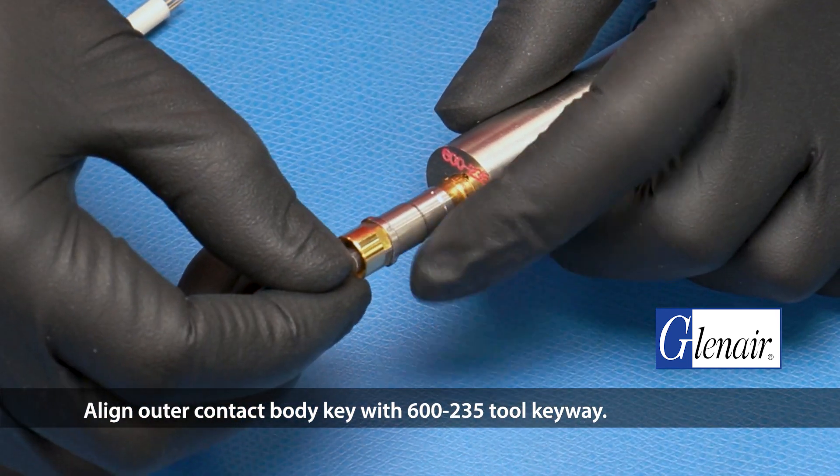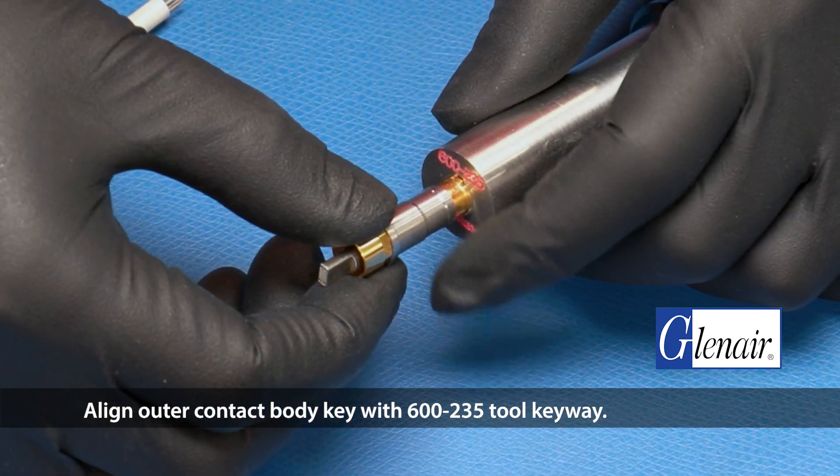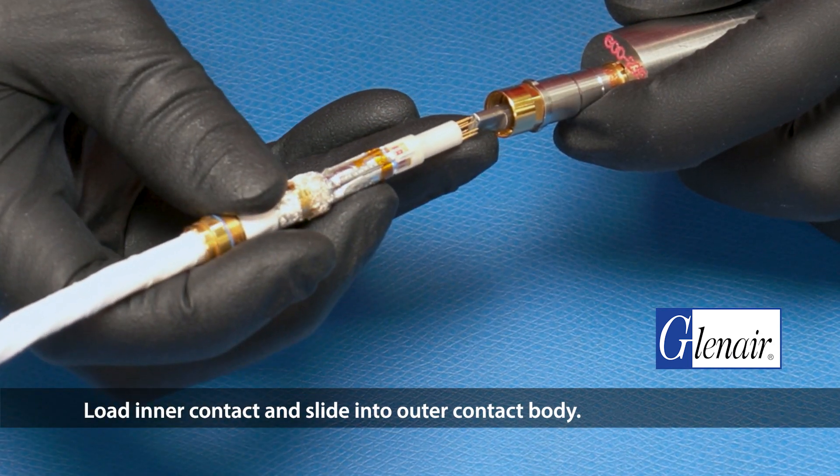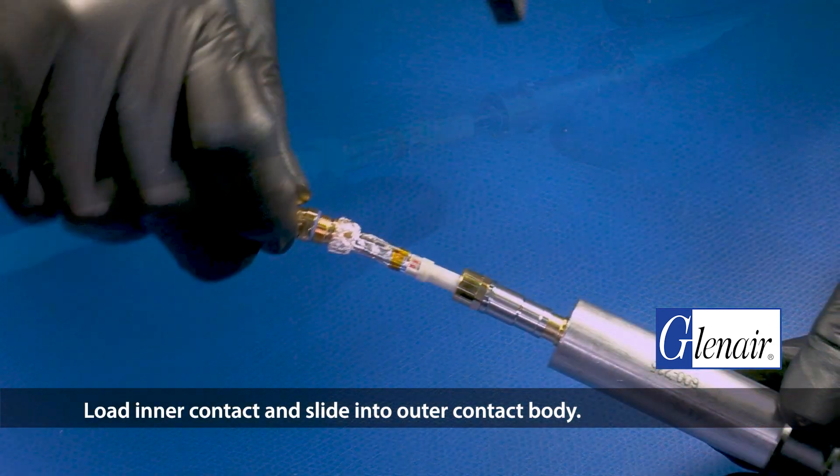Align outer contact body key with 600-235 tool keyway. Load inner contact and slide into outer contact body.